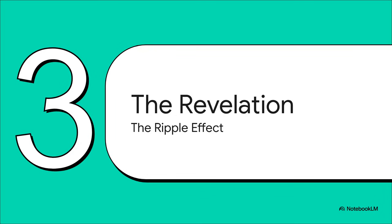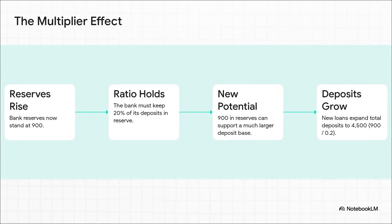So where's the magic? That little deposit started a chain reaction. The bank now has 900 in reserves, but their reserve requirement is only 20%. That means those 900 units can legally support a much bigger amount of loans and deposits. Divide 900 by the 0.2 reserve ratio, and you find the bank can now support a total of 4,500 in deposits by creating new loans.